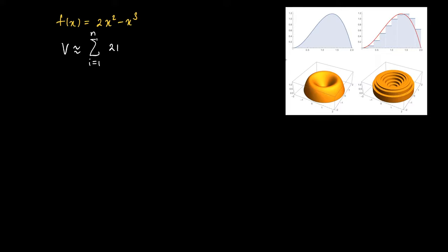So we have that the volume is approximately the sum of the volumes of n cylindrical shells, which is approximately given by the sum over i equals 1 to n of 2π xi star times f of xi star times delta x.